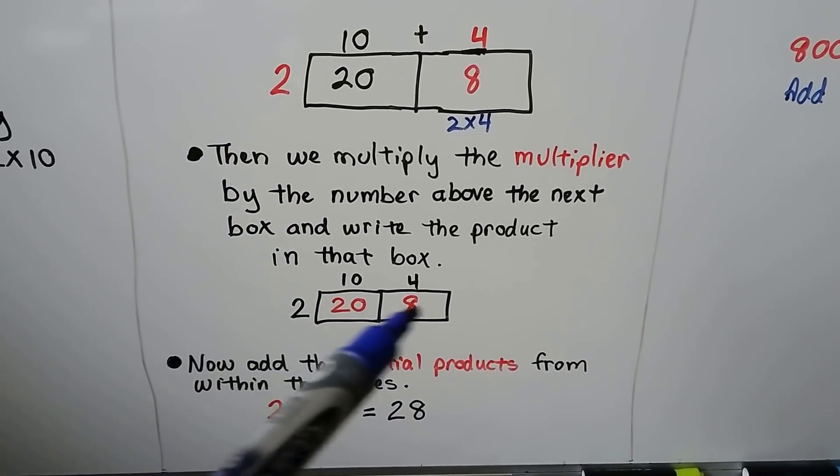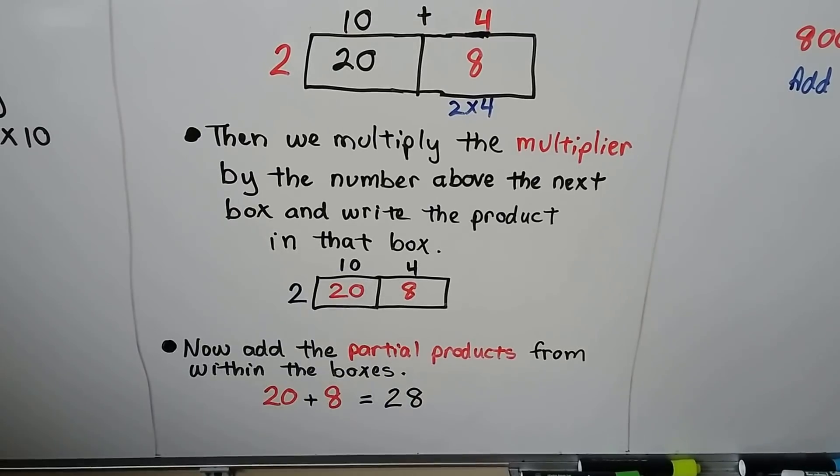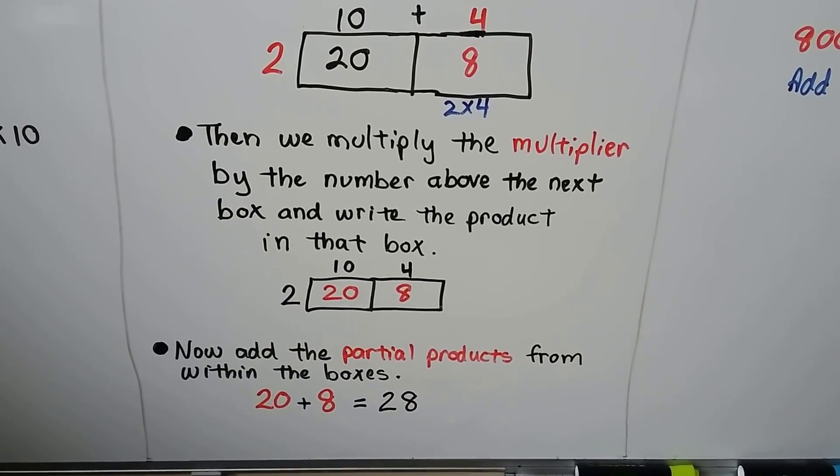So now our products, our answers, are in the box, and we add the partial products together that are within the boxes, and we get 20 plus 8, which equals 28.